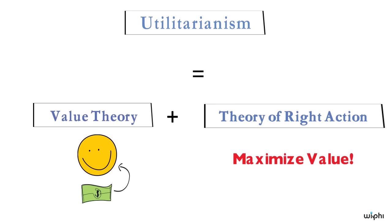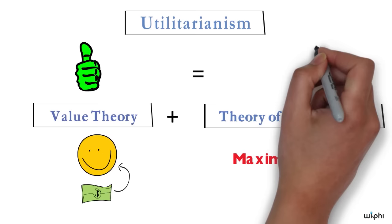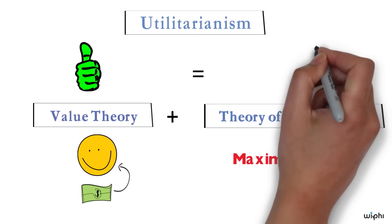It's important to notice that these two elements of utilitarianism can be separated. We can accept the utilitarian view of what's valuable without embracing its claim about what that means for how we should act. And we can accept the utilitarian claim that the right action is the one that makes the most value without accepting the claim that happiness and the absence of suffering are all that's valuable.